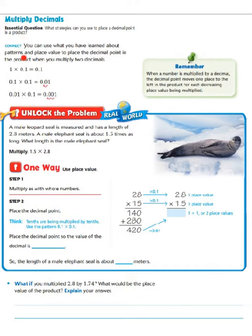You can use what you have learned about patterns and place value to place the decimal point in the product when you multiply two decimals. For example, 1 times 1 tenth equals 1 tenth. Then 1 tenth times 1 tenth moves the decimal place to the left, giving us 1 hundredth. And 1 hundredth times 1 tenth moves the decimal point to the left again, equaling 1 thousandth. So when a number is multiplied by a decimal, the decimal point moves one place to the left in the product for each decreasing place value being multiplied.